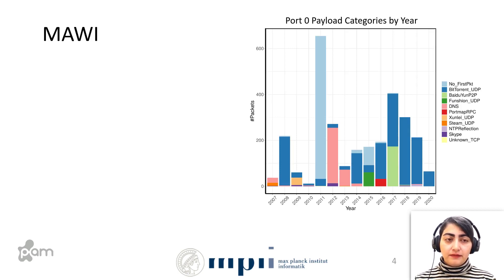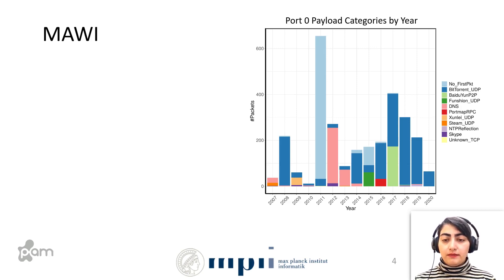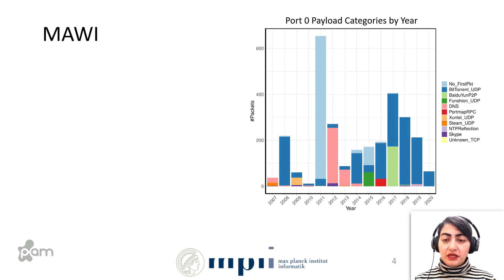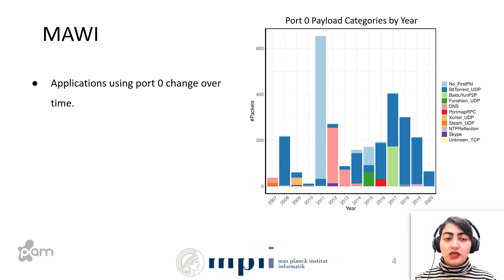We took a look at the Mavi dataset, which spans multiple years. The advantage of Mavi is that we have full packet header information plus some amount of payload. We classified payloads seen in port 0 traffic using libprotoident. In the plot, the Y axis shows number of packets and the X axis shows year. In 2008, BitTorrent was the most prominent application using port 0, while in 2012 we see DNS. Applications using port 0 change over time.